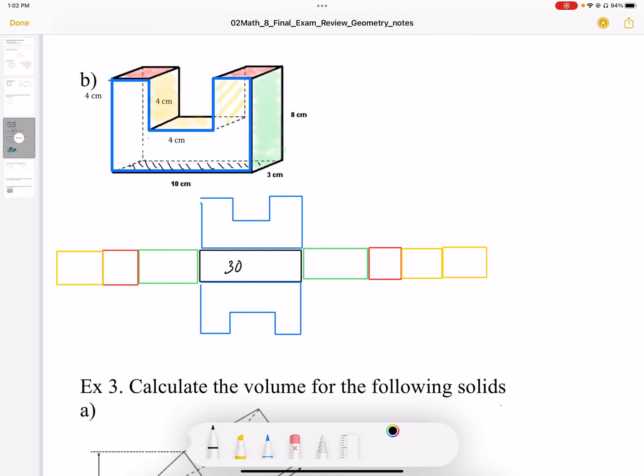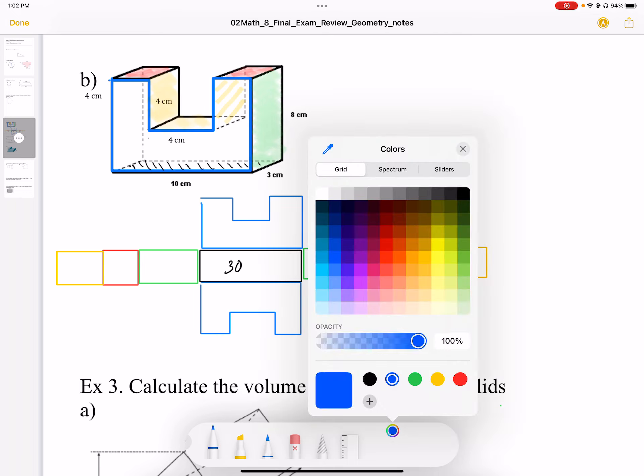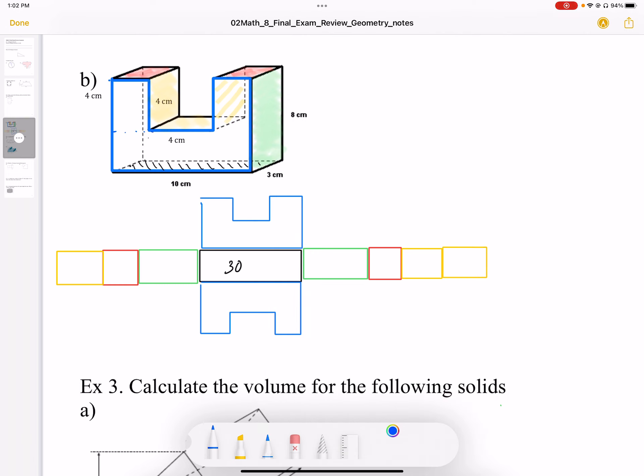In the front, the blue face, we can break this up into a few different ways. I'm going to break this up into a rectangle. That's a length of 10, that's going to give us a height of 4. So this height here is going to be 4 centimeters. So we know we have 40 centimeters squared.